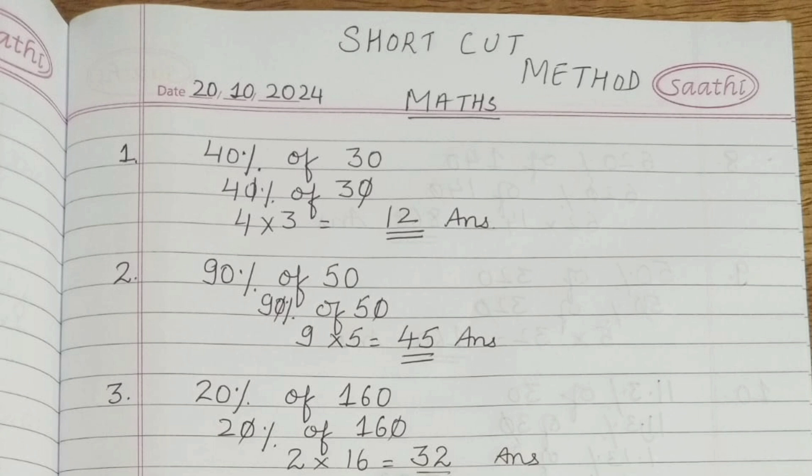Second is 90 percentage of 50. Cut the zeros from both sides - from 90 and 50. You will get 9 and 5. Multiply 9 into 5, and you get 45.